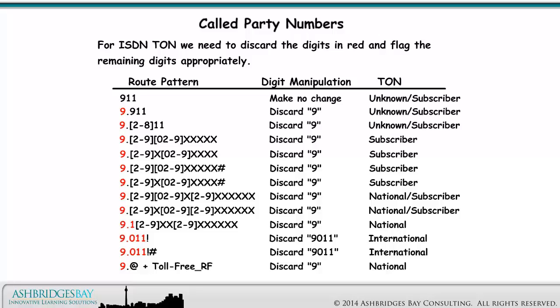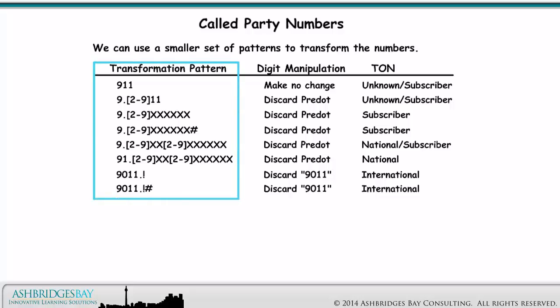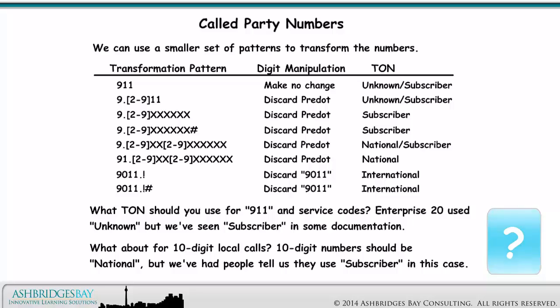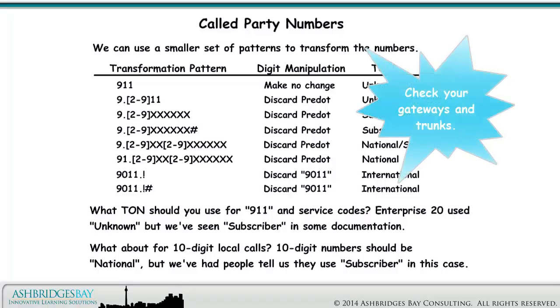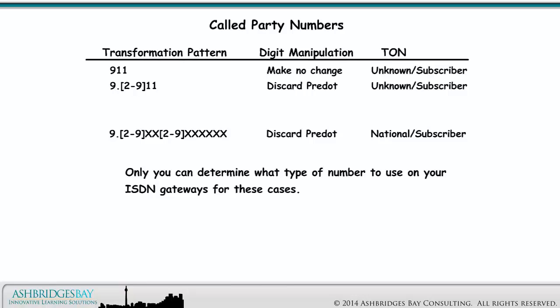For ISDN type of number, we need to discard the digits in red and flag the remaining digits appropriately. We can use a smaller set of patterns to transform the numbers. What type of number should you use for 911 and service codes? Enterprise 20 used unknown, but we've seen subscriber in some documentation. What about for 10-digit local calls? 10-digit numbers should be national, but we've had people tell us they used subscriber in this case. Check to see how your gateways and trunks to the PSTN work. Only you can determine what type of number to use on your ISDN gateways for these cases.